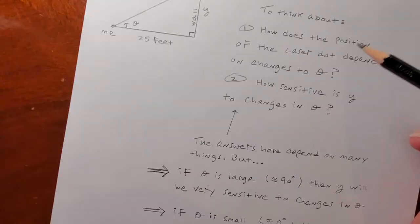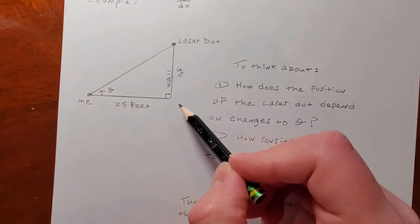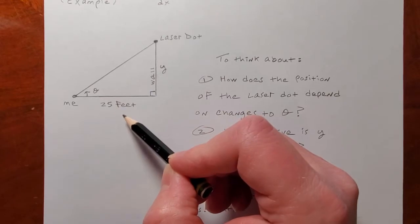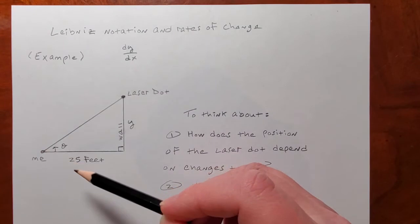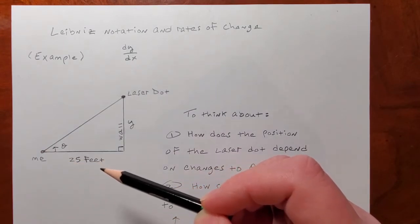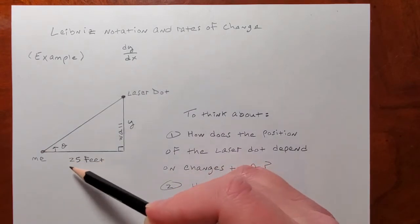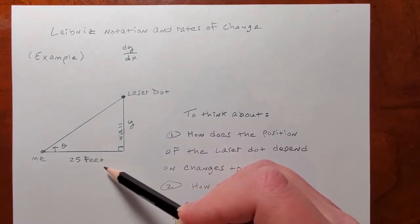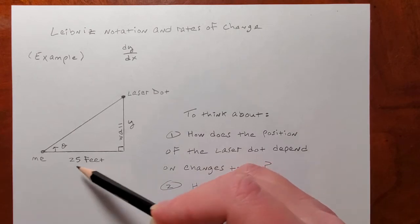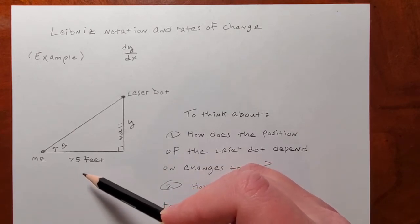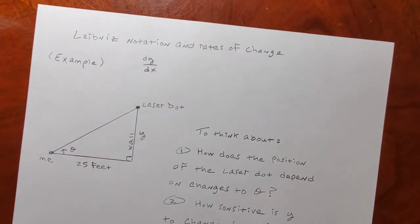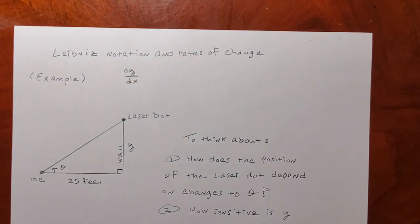There are other factors, such as how close you are to the wall, but in my problem I'm going to hold that fixed at 25 feet — it's going to be a constant. You know how if such and such is a constant, the rule says to do this or that. Well, 25 feet is a constant. It's going to be 25 feet no matter what — that's not changing.